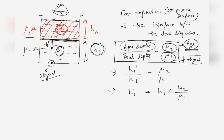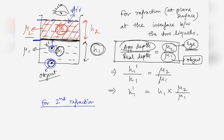For the second refraction at the interface of air and the μ2 medium, the object for this refraction is not the original object but its image formed at h1 dash. Therefore the real depth for this second refraction is the entire length h2 plus h1 dash.